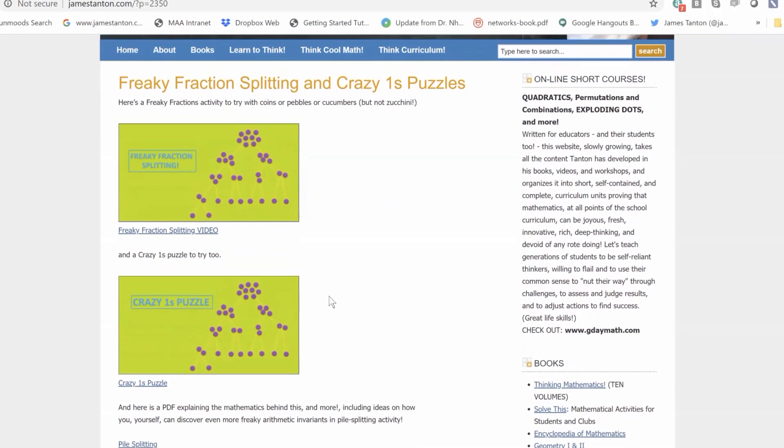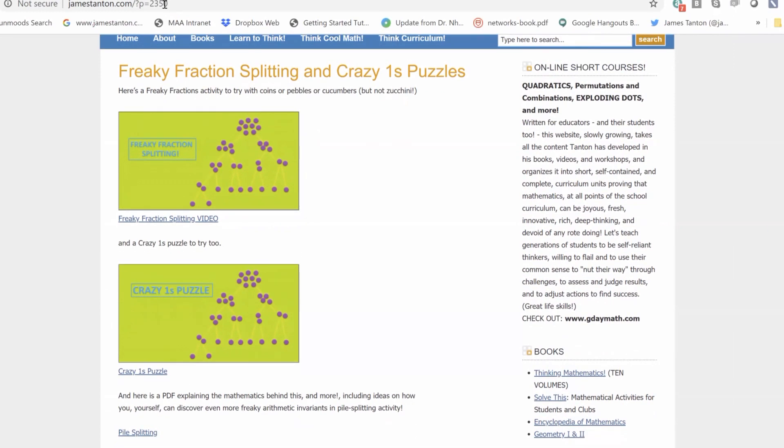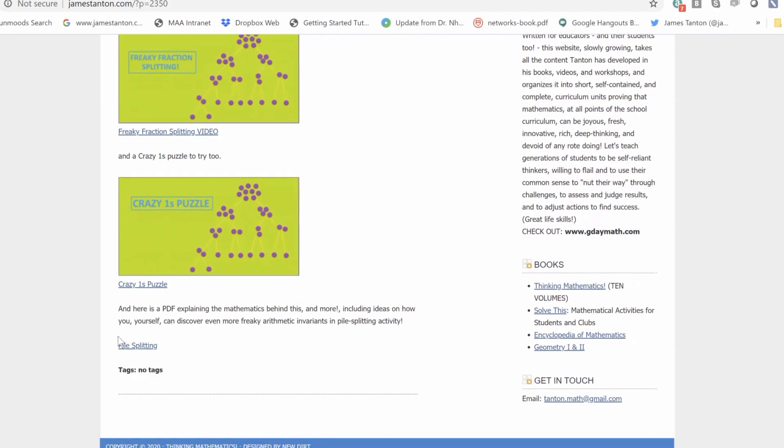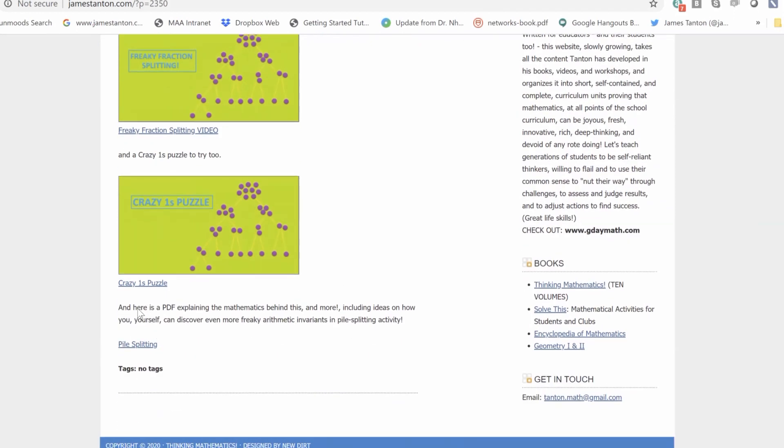Here is a website on my page. JamesTan.com slash question mark P equals 235. Just remember that. I'm sure it's easy to remember. I'm just so obsessed with these fractions and crazy ones. I made little videos just before this call really just explaining to the world. So you can watch the videos again. That's great. But here is a PDF pile splitting. I actually explain everything I did much more clearly and slowly than I just did now for everyone. Feel free to go to that PDF and download it and read it at your leisure and I'll explain everything very carefully and show you exactly how my brain works.